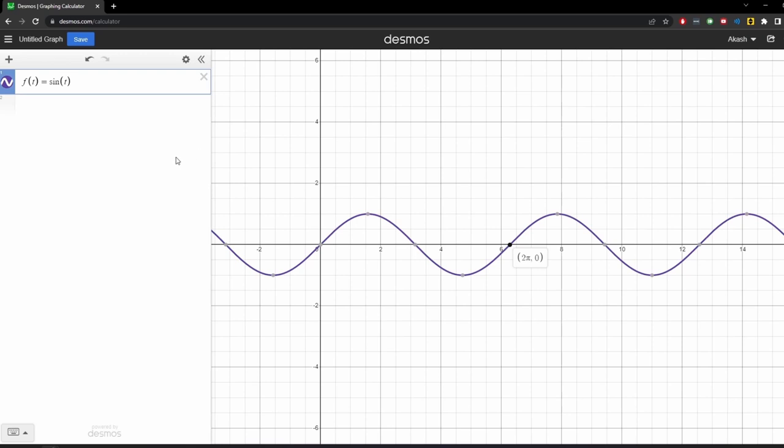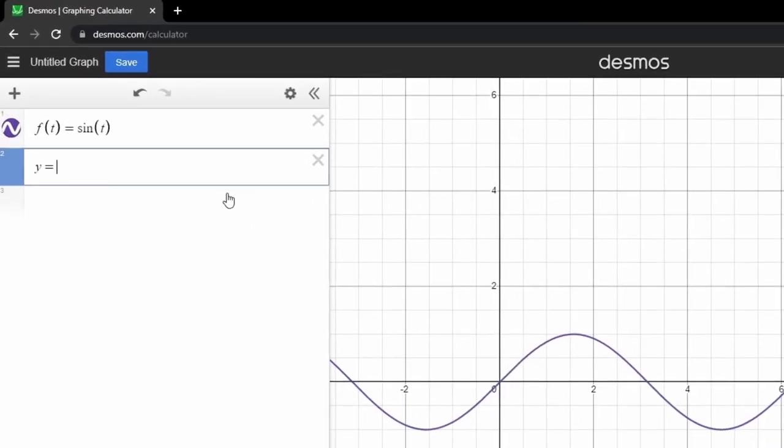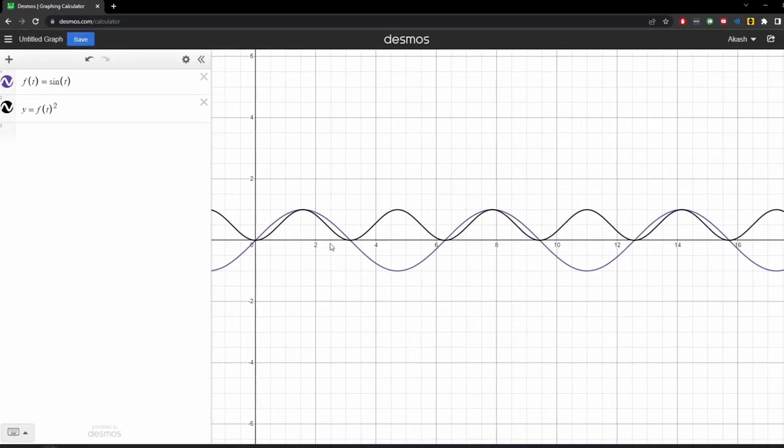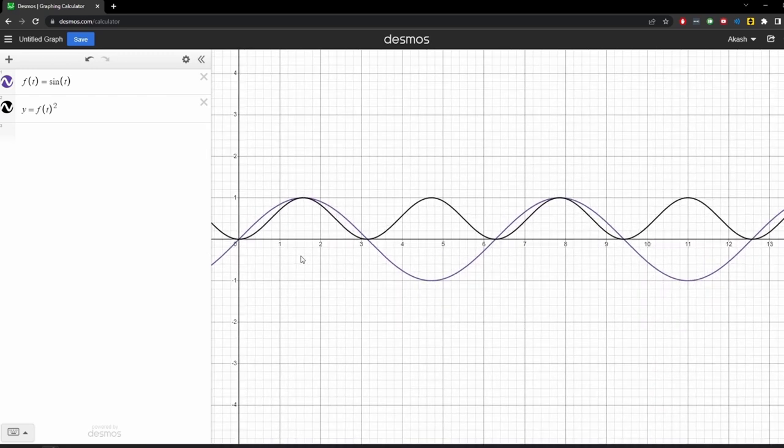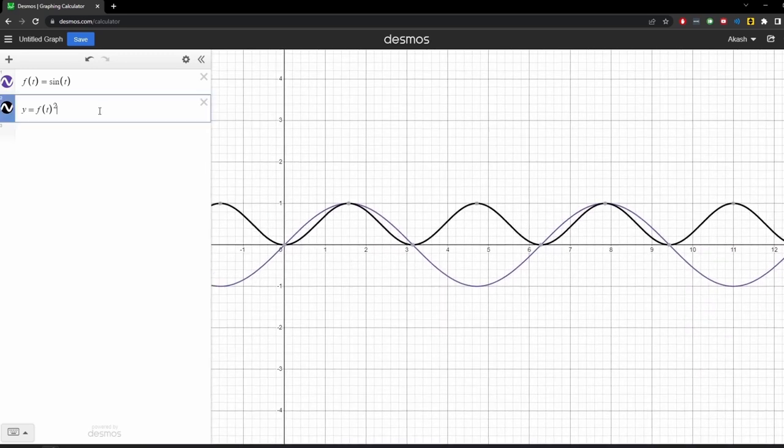We now know that RMS is root mean squared, but let's go backwards when analyzing. Squared. We square the function f of t. The square of any number is always a positive number, and so the function is restricted to the positive amplitude axis.